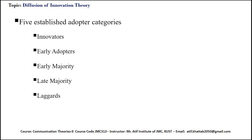The first category is the innovators. Innovators are those people who want to be the first to try an innovation. They are interested in new ideas, willing to take risks, and are often the first to develop new ideas. Very little, if anything, needs to be done to appeal to this population.